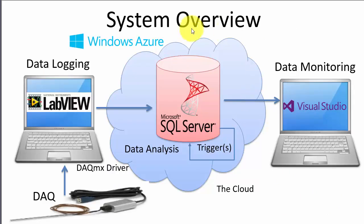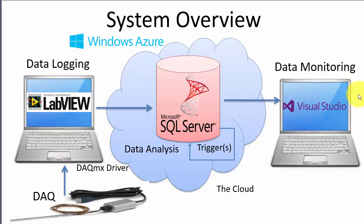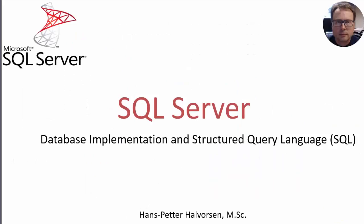Now that we have the database in the cloud, we are ready to implement it for our system. We need to implement tables, stored procedures, and triggers that we need in our applications, and then we can start creating the data logging and data monitoring applications. We will use SQL Server Management Studio to connect to the database we created in the cloud, and then use the Management Studio to implement tables, stored procedures, and triggers.